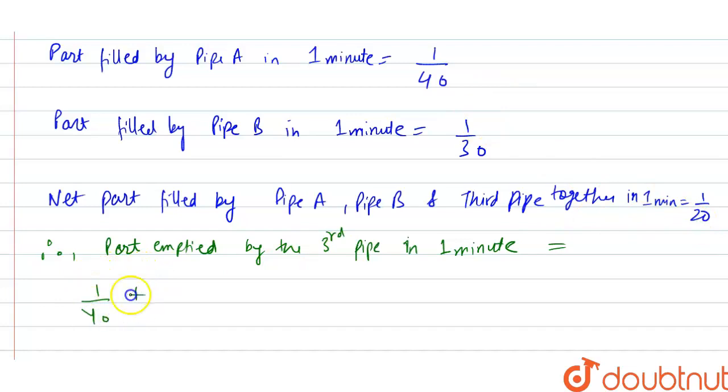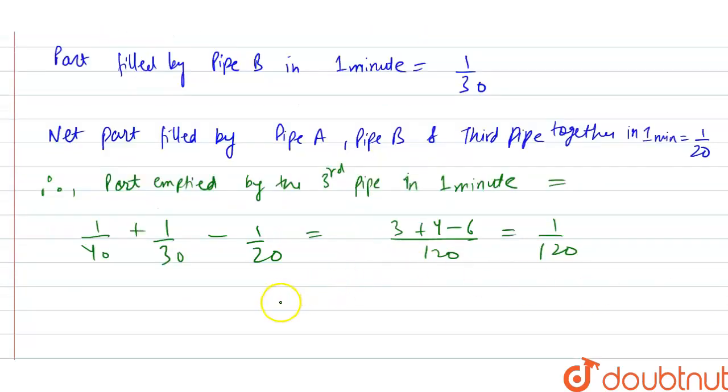So it will be 1 upon 40 plus 1 upon 30 minus 1 upon 20, as these are the parts that are filled by A and B and this is the net part filled by A, B, and the third pipe. So now it is equal to - we will take LCM, LCM will be 120. So it will be 3 plus 4 minus 6 is equal to 1 upon 120. So now, that is, the third pipe alone can empty the system in 120 minutes.